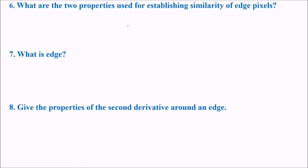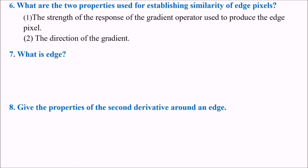What are the two properties used for establishing similarity of edge pixels? The two properties used for establishing similarity of edge pixels are first the strength of response of the gradient operator used to produce the edge pixel and the direction of the gradient. The strength of the response, you can say the magnitude, and the direction of the gradient.